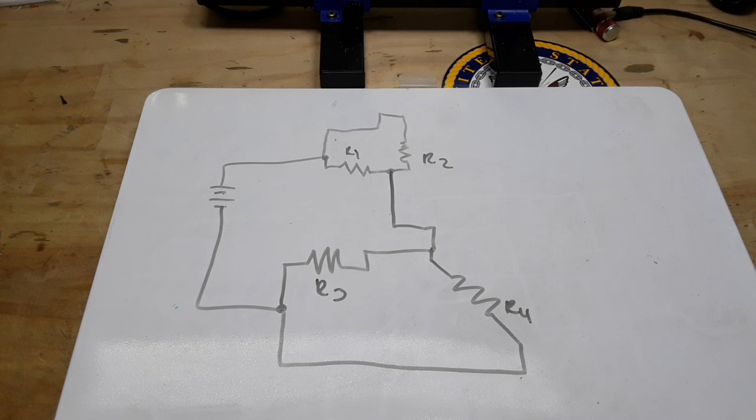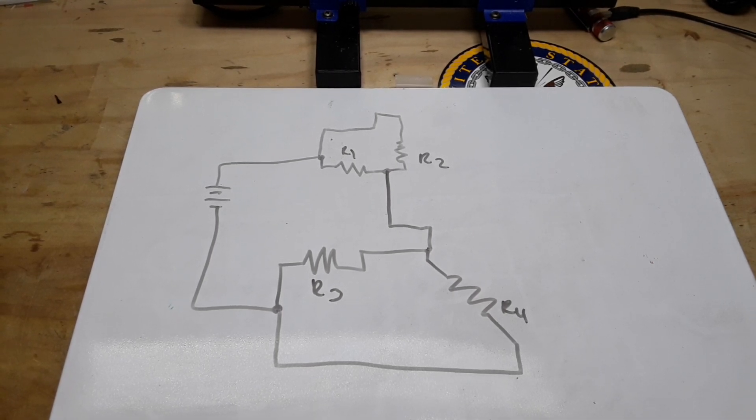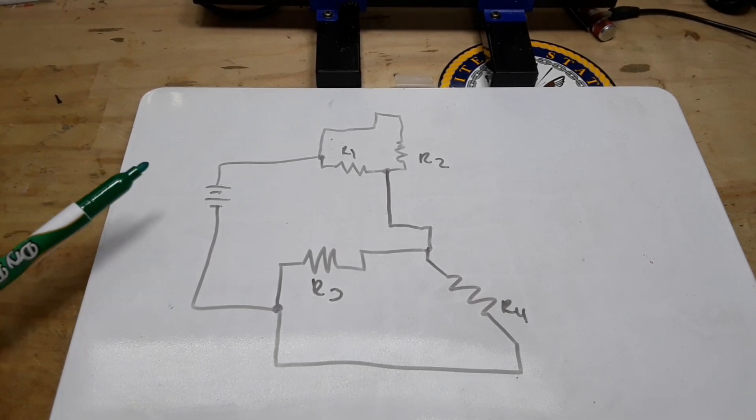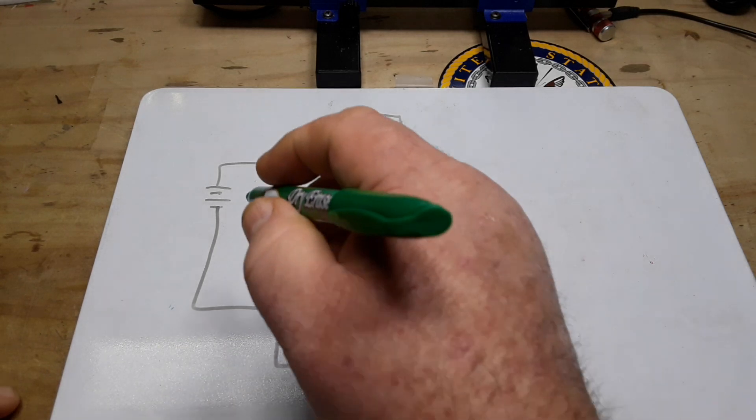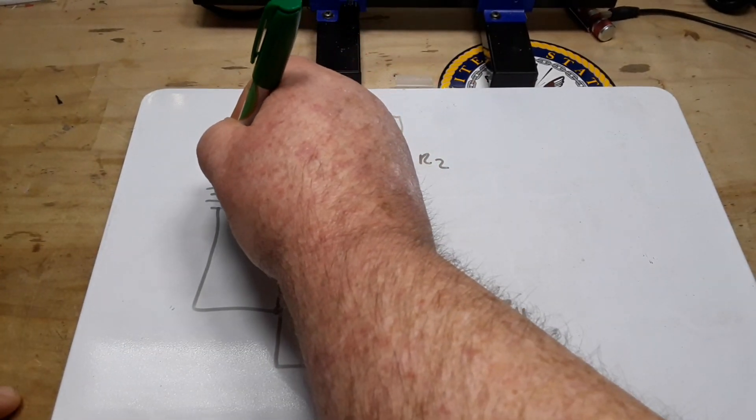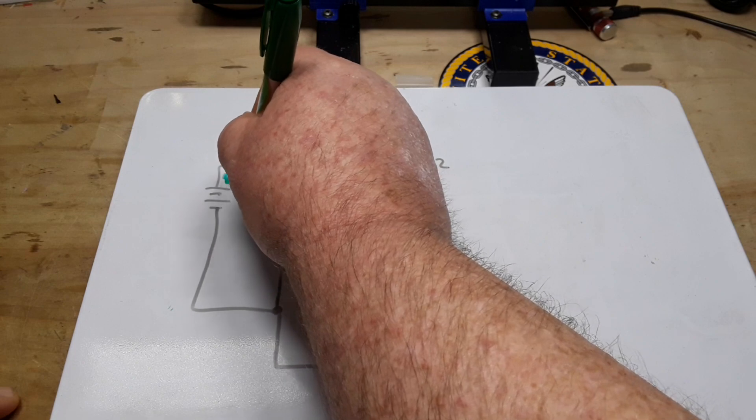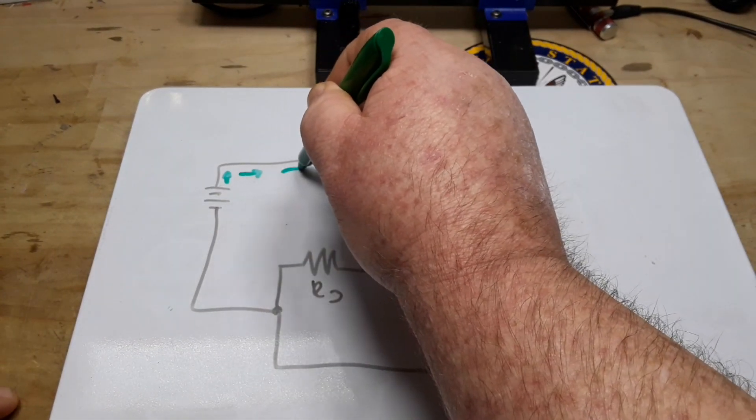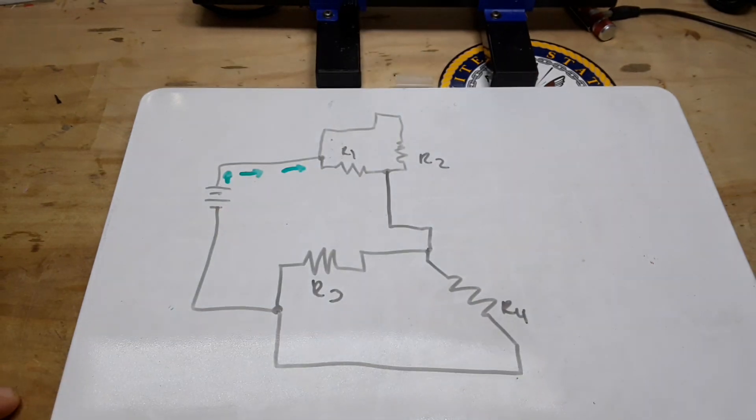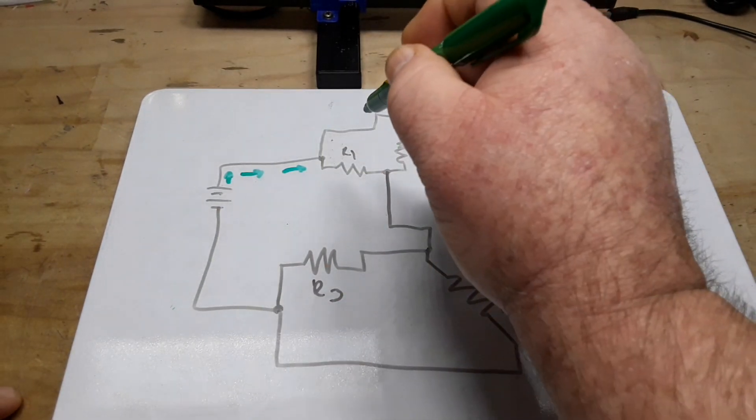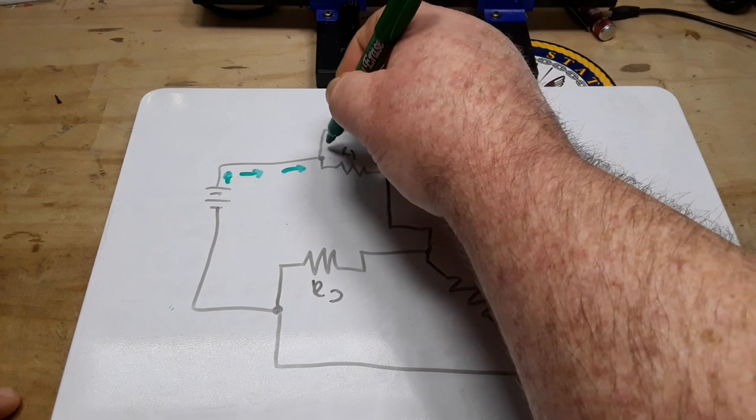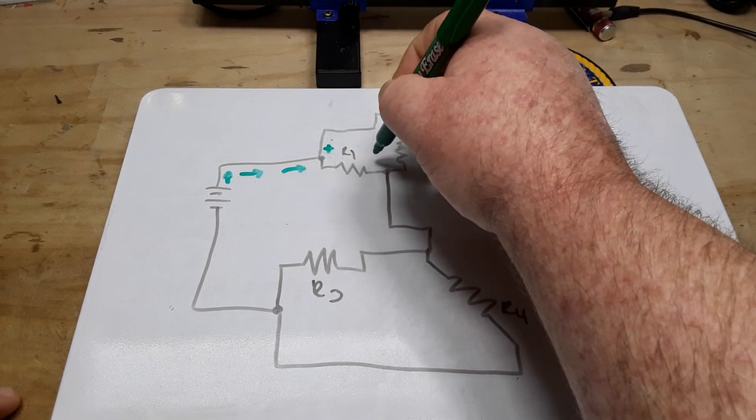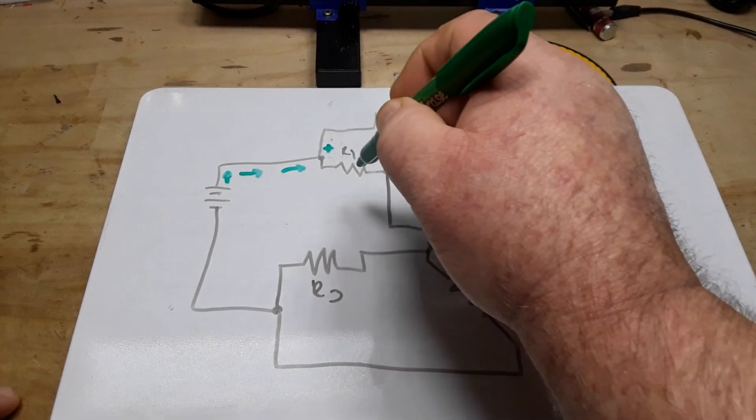So one of the first things we can start doing is just tracing the current. So let's get a marker and start with that. We're going to start at the positive terminal of the battery and we'll draw some arrows showing us the direction the current is flowing.